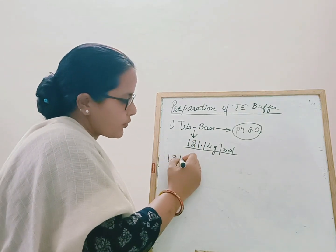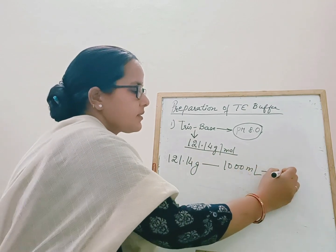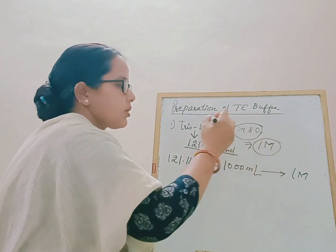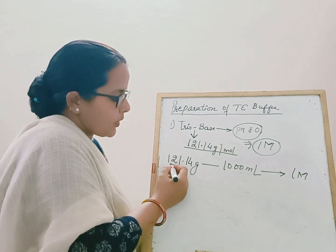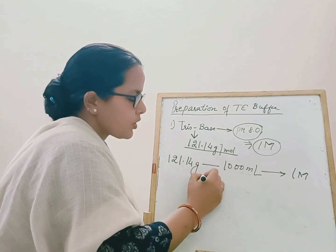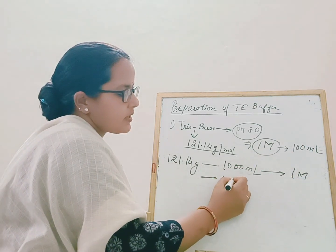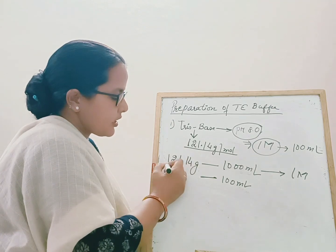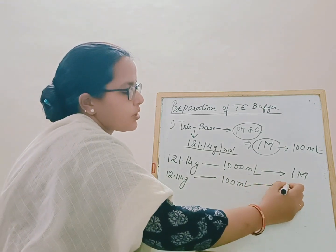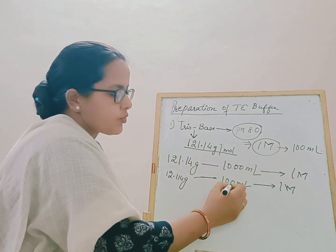So 121.14 grams dissolved in 1000 ml gives 1 molar. If you are preparing 100 ml, you add 12.114 grams of Tris to 100 ml of water to get a 1 molar solution. Dissolve 12.114 grams in about 50 ml of water initially, and this becomes your stock. You will then need to adjust the pH to 8.